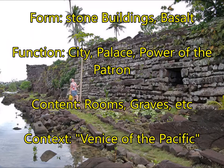Our first work in this unit is Nan Madal, the first example of Pacific architecture. For form, you'll need to remember that the stone used was basalt, which breaks into nice, neat, column-like structures and was easy to move. For function, think of our big idea of Power of the Patron — a gathering place for the elite of the area.